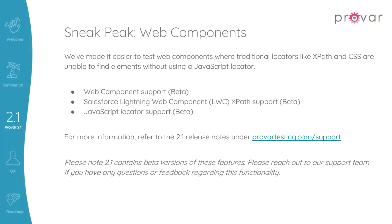Additionally, ProVar has added a new by JavaScript locator where we are unable to generate a unique XPath locator. This is essentially a CSS selector that penetrates through the Shadow root. This query locator is more robust than the Shadow Path generated by the LWC Shadow Path Generator Chrome extension. We have defined these new features as beta for now, and we're going to continually provide more improvements and usability enhancements in future releases.